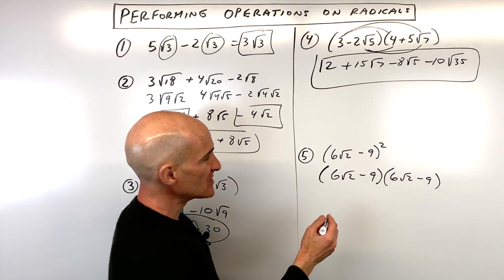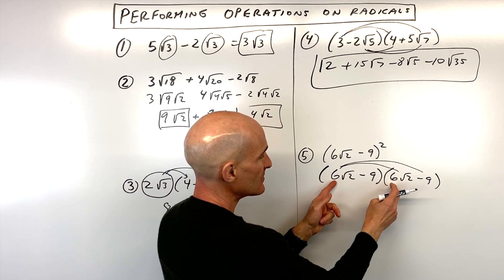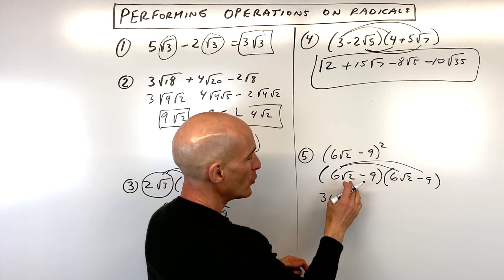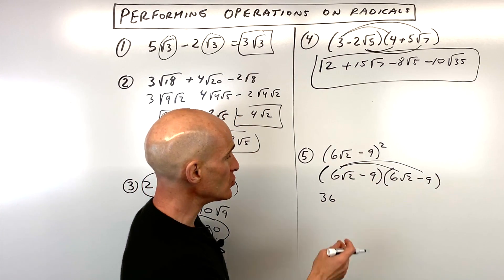So now we're going to do the same thing we did in this first example. We're going to distribute. So we have six times six is 36. And notice whenever you multiply a square root times itself, square root of two times square root of two, you just get the number underneath, which is two.